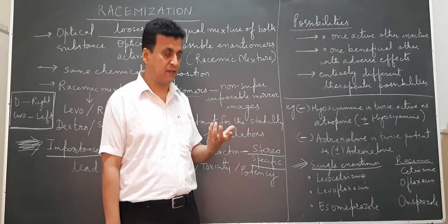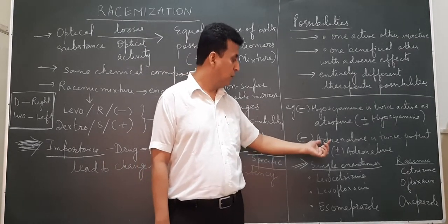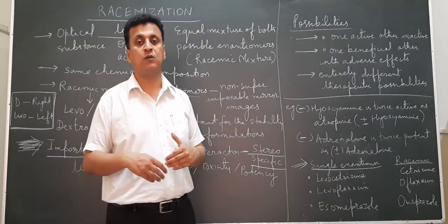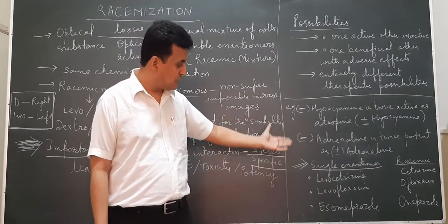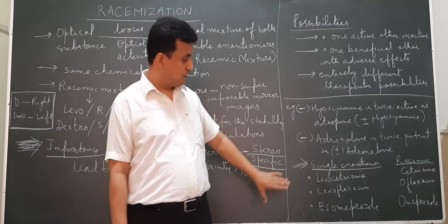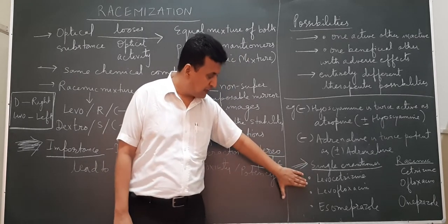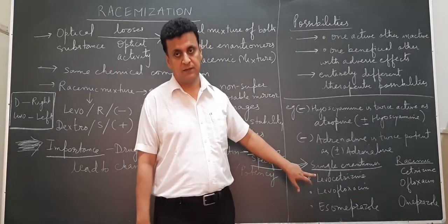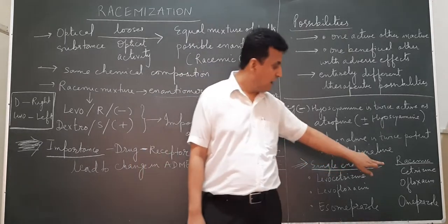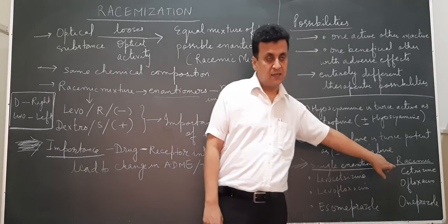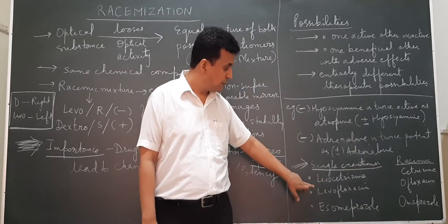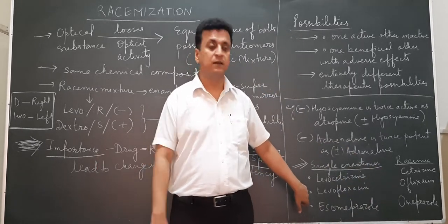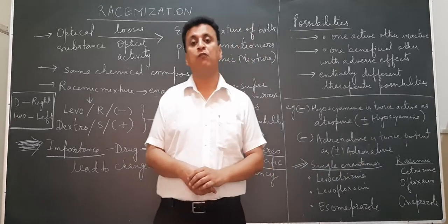To give you practical examples of products available in the market, these are levo forms separated from their racemization: levo-cetirizine is the levo form of cetirizine, levo-ofloxacin is the levo form of ofloxacin, and esomeprazole is the levo form of omeprazole.